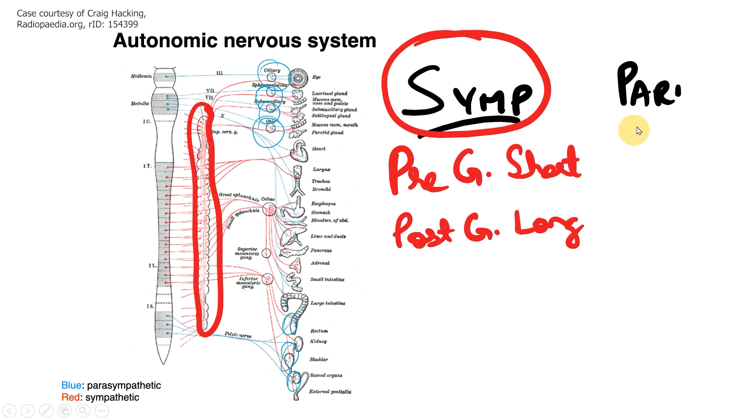But if you compare that with the parasympathetic system, parasympathetic system will have long pre-ganglionic fibers and shorter post-ganglionic fibers.